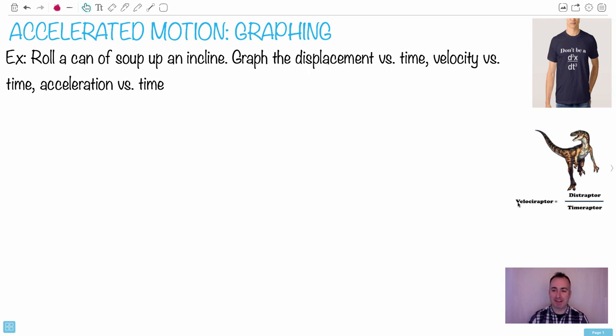First of all, I just want to show you this funny - I like the velociraptor. It's almost like velocity, so it's distance over time. I also like this one here: don't be a jerk. This is the third derivative of position with respect to time. The second derivative of position in time is acceleration. We have something in physics that's the third derivative - it's actually called jerk, so that's why it's don't be a jerk.